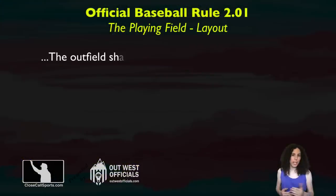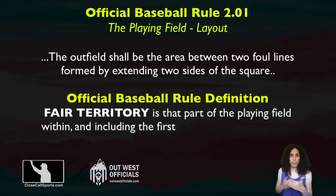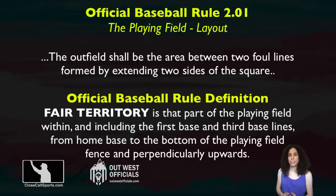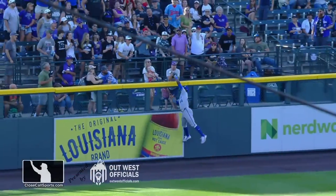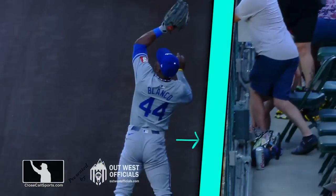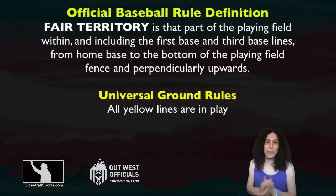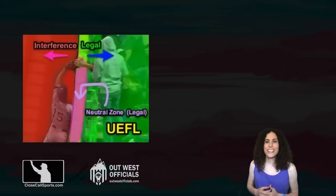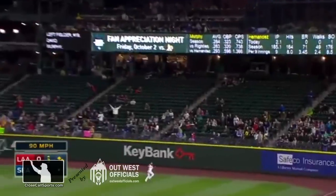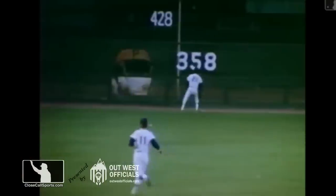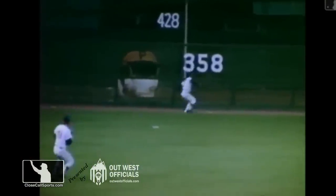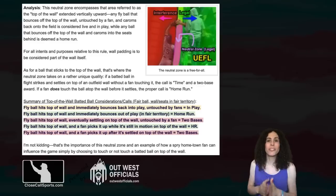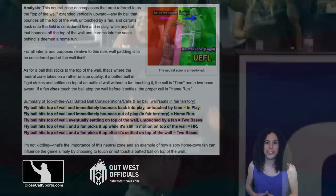Now we need to define the playing field, which ends at the base of the wall at the warning track and extending perpendicularly upwards. That means that this yellow line — or top of the wall, in this case it's painted, but it doesn't have to be painted — the top of the wall is considered baseball's neutral zone. If the ball hits the top of the wall and bounces out, it's a home run. If the ball hits the top of the wall and bounces back into play, it's alive and in play. The top of the wall is the only portion of the field that can be treated two ways for the same piece of real estate.